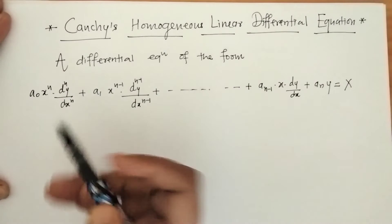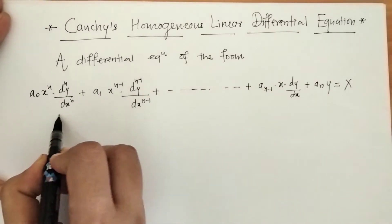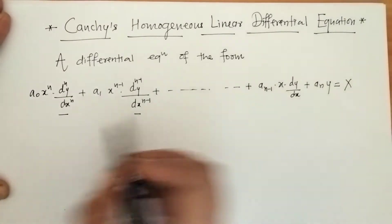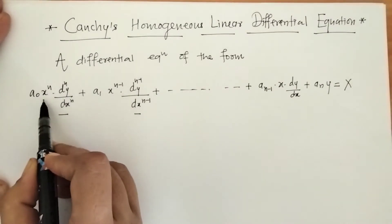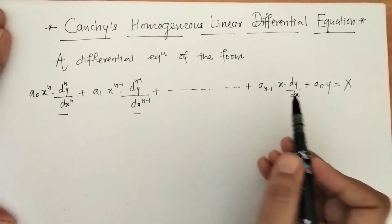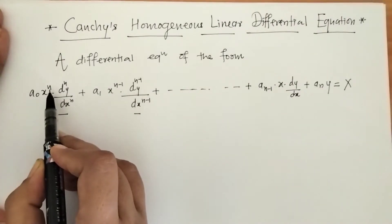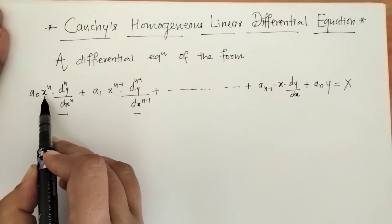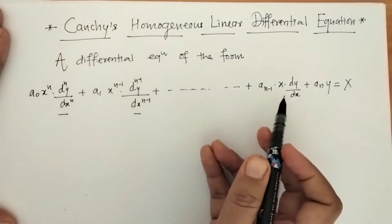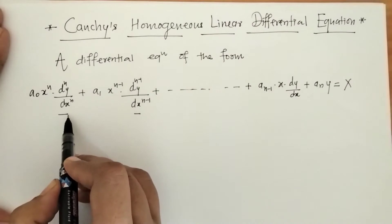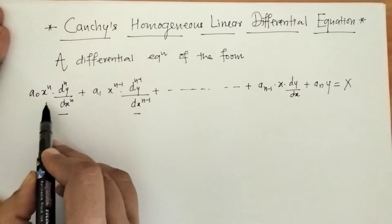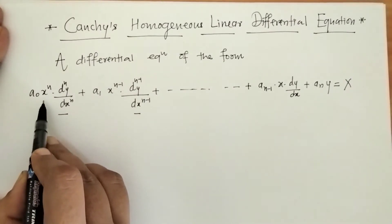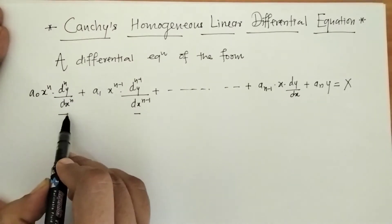A differential equation where we have derivatives in decreasing order and the coefficients of these derivatives are variable. Here we can check that in each term we have coefficients x raised to n, x raised to n minus 1, and so on. So this is a differential equation with variable coefficients. We can also check that in each term the index of x raised to n and the order of the derivative is the same.